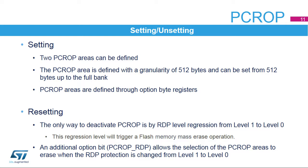The PCROP protection can only be removed by an RDP level regression from Level 1 to Level 0. When executed, this mechanism triggers a full mass erase of the flash memory. Depending on the PCROP RDP option bit, the PCROP areas are erased when the RDP protection is changed from Level 1 to Level 0.